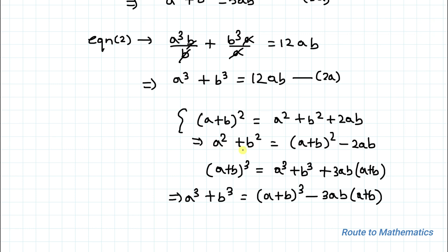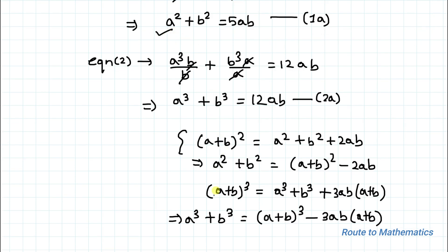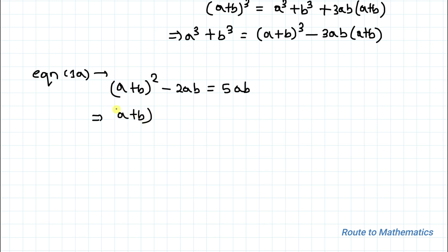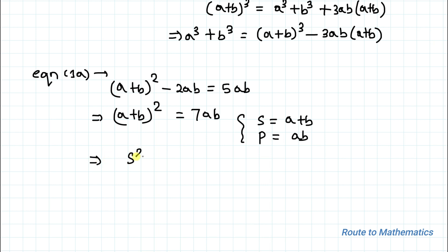We substitute these expressions into equations 1a and 2a. From equation 1a, substituting a² + b² = (a+b)² − 2ab, we get (a+b)² − 2ab = 5ab, which gives (a+b)² = 7ab. Let s = a + b and p = ab. Equation 1a becomes s² = 7p — let us call this equation 3.